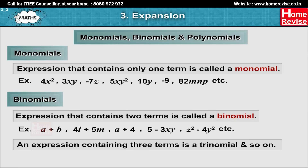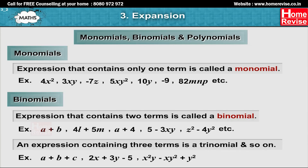An expression containing three terms is a trinomial and so on. For example, a plus b plus c, 2x plus 3y minus 5, x squared y minus xy squared plus y squared, etc.